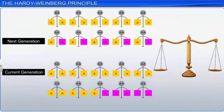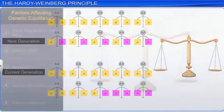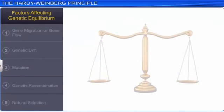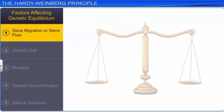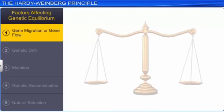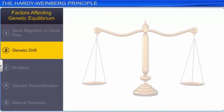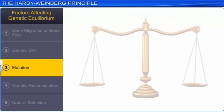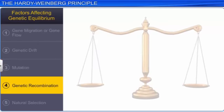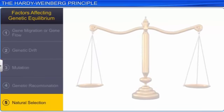Genetic equilibrium serves as a baseline against which we can measure genetic change. However, it is affected by several factors such as gene migration or gene flow, genetic drift, mutation, genetic recombination, and natural selection.